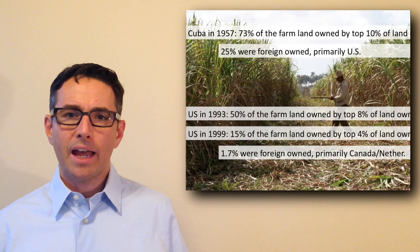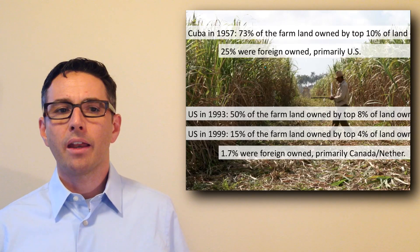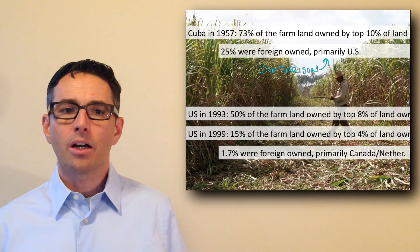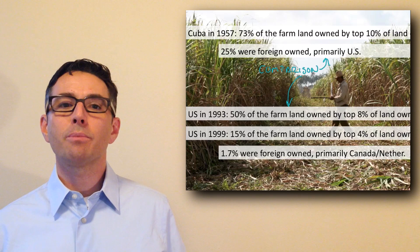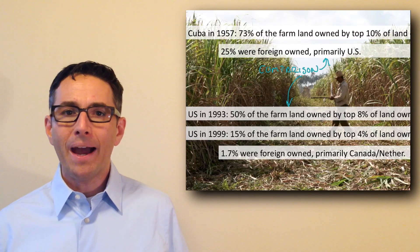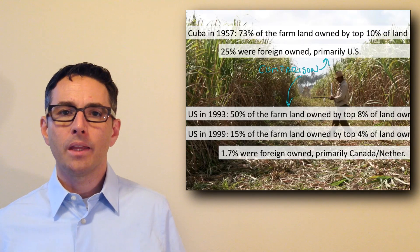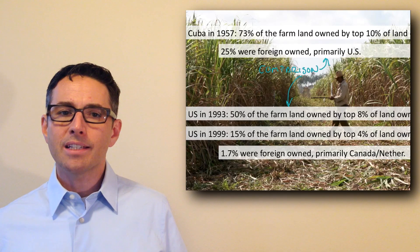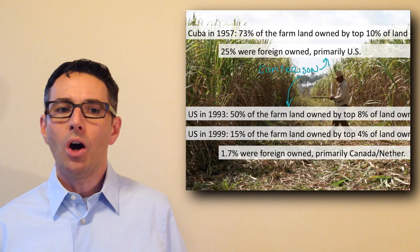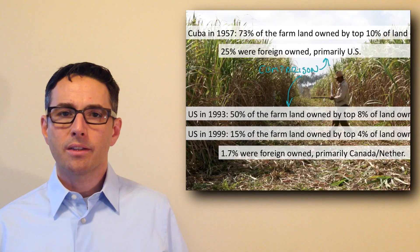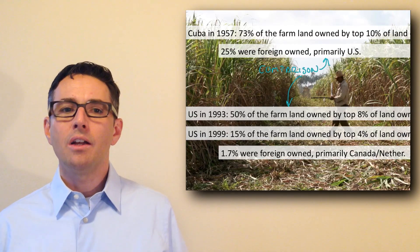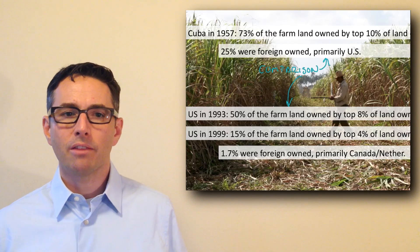Prior to the revolution, prior to Fidel Castro taking over, the majority of the farming land in Cuba was held in large sugarcane plantations. These were ranches or estates called latifundios, and the emphasis should be on 'large' — these organizations owned about 95% of all large farms in Cuba. 25% of those latifundios were owned by foreign interests, primarily American. In 1957, it's estimated that 10% of the landowners owned 73% of the agricultural land — a statistic that demonstrates a highly unequal distribution of resources.